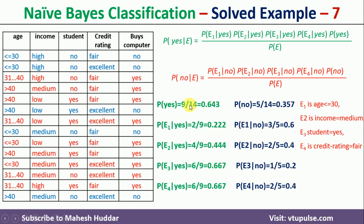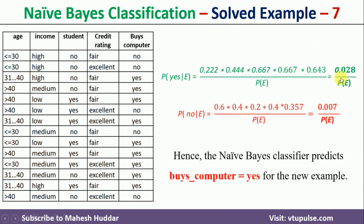Once all prior and conditional probabilities are calculated, we plug them into the two equations. Solving gives: P(yes|E) = 0.028 / P(E), and P(no|E) = 0.007 / P(E). Comparing these two posterior probabilities, P(yes|E) is greater than P(no|E), which indicates the new example should be classified as yes.